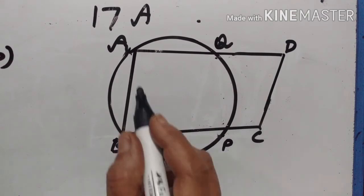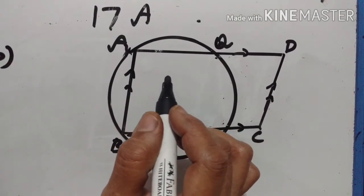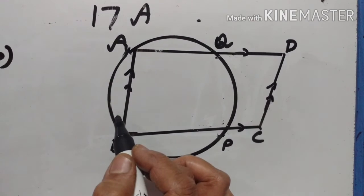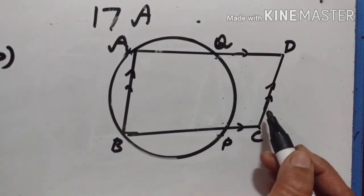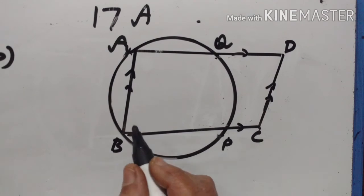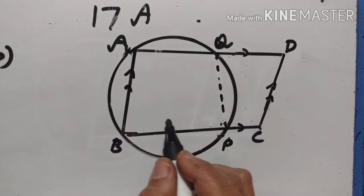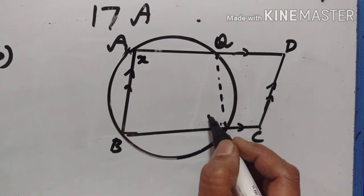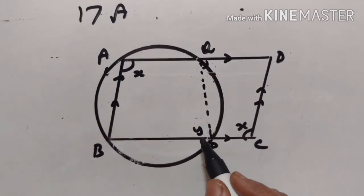19B. ABCD is a parallelogram. A circle through vertices A and B meets side BC at P and side AD at Q. We have to show that quadrilateral PCDQ is cyclic. ABPQ is a cyclic quadrilateral. Let angle A equal X and angle BPQ equal Y. So X plus Y equals 180 degrees — opposite angles of a cyclic quadrilateral are supplementary.